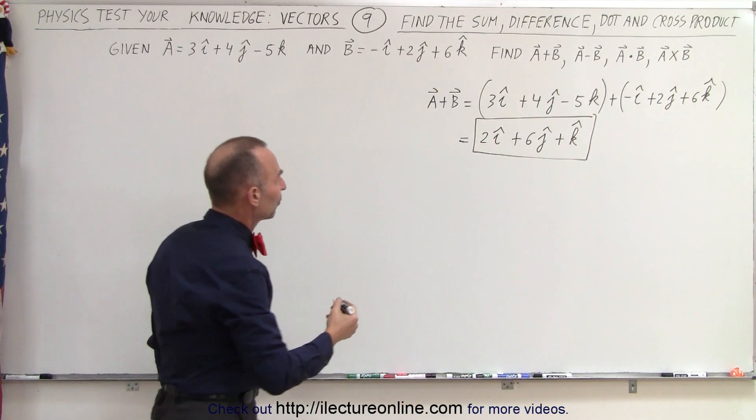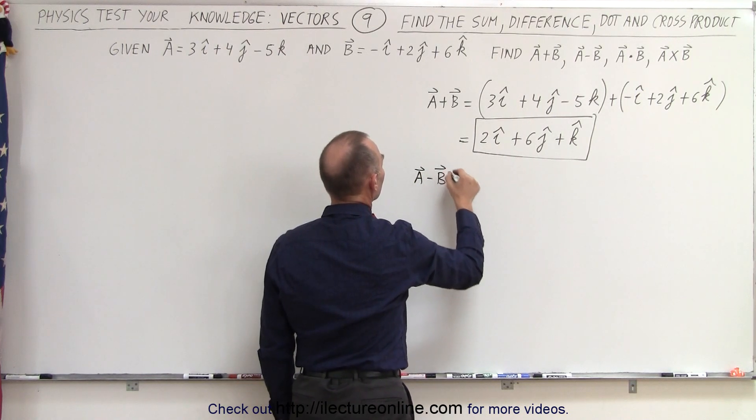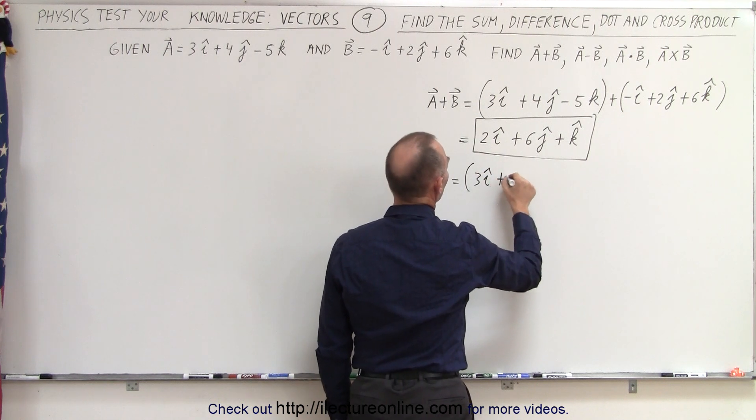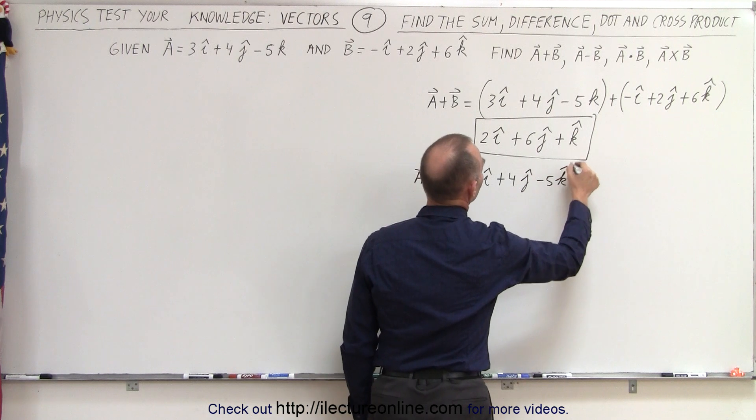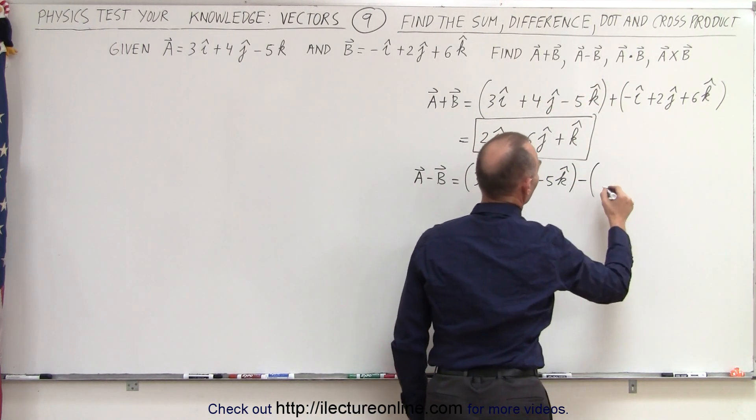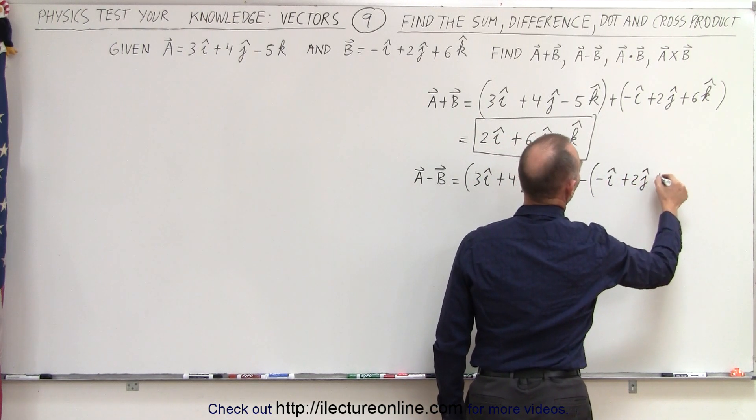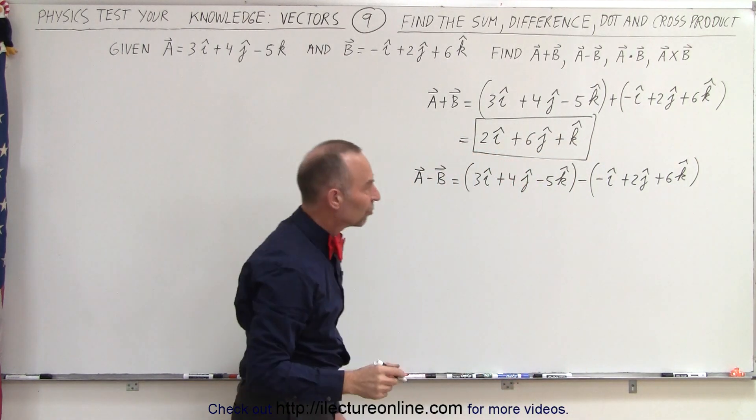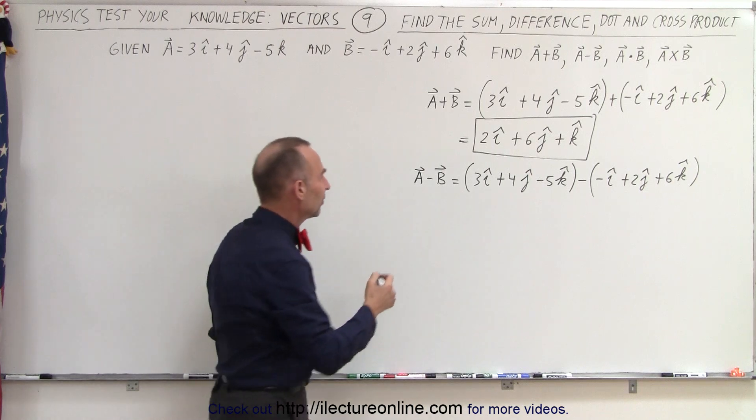Now, what if we take the difference between them? What if we take a minus b? Well, that is equal to the first vector, 3i plus 4j minus 5k. And now we're going to subtract the second vector, which is minus i plus 2j plus 6k. Sometimes it makes it a little bit easier when we realize that when we subtract vectors, it's like adding the negative of the second vector.